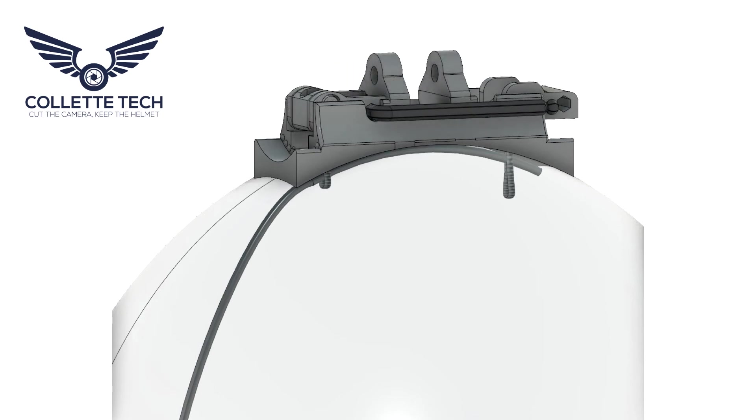With the Allen key inserted in the tensioner, close the tensioner on both sides using both thumbs to assist in closing. This will place tension on the closing loop and secure the mount base to the helmet.